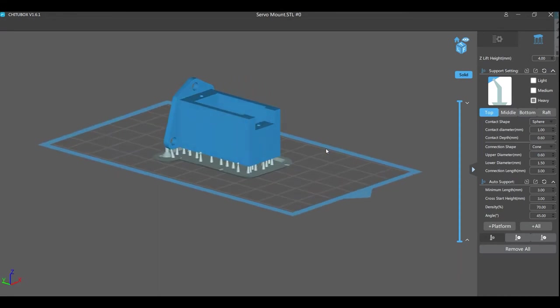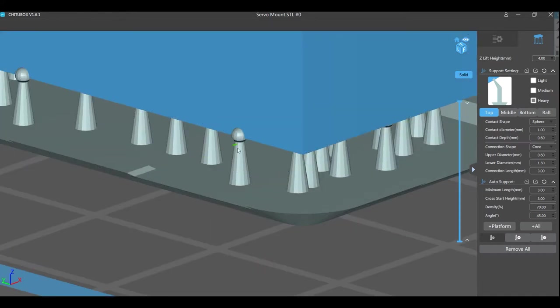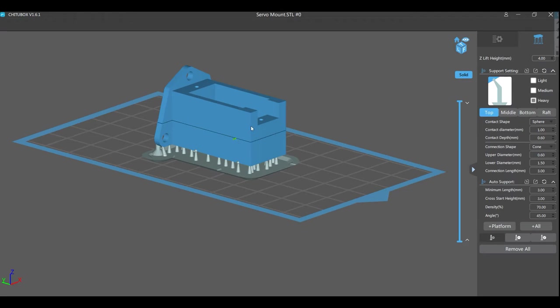Except what we need to do is just elevate it off of the bed of the machine, which is represented by this grid. And to do that, we need to add support. Now a ChittuBox is very simple. The top right hand corner of the screen is a little add support tab. So I'll click on that. And what I'm going to do here is get it to do it automatically. So under the auto support tab, I just click all. And that will generate the support that is required just to lift that off of the bed of the machine.